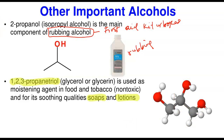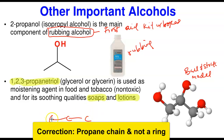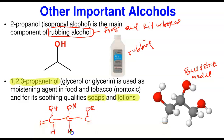This is the ball-and-stick model of glycerol. Glycerol is a trihydric alcohol because it has three hydroxyl (OH) groups. To draw it: propane has three carbons, and each carbon carries an OH group — hence 1,2,3-propanetriol. The numbering gives positions one, two, and three, making it a triol.